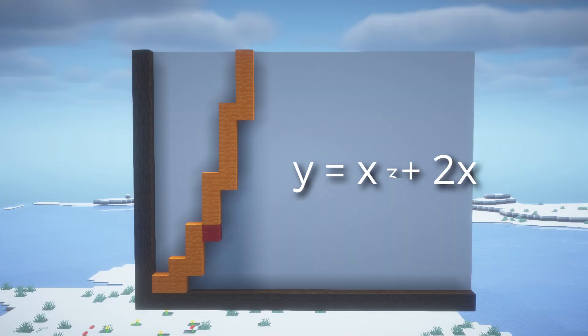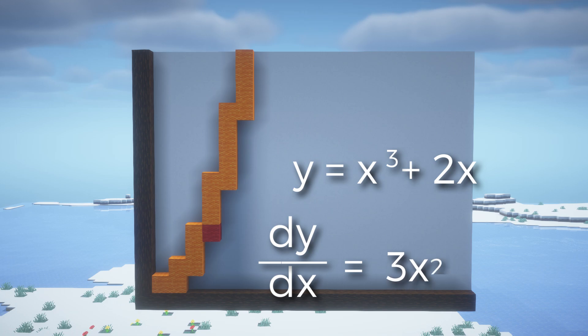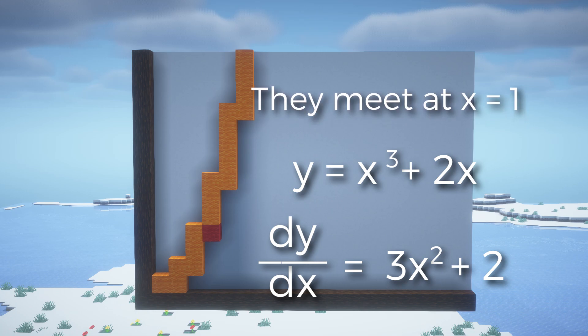So applying this to our equation, if we take the derivative of this equation, our first term would be 3x squared, added to our second term, which would be 2. Now we plug in the point that they meet at, which is x equals 1. So we plug in 1 to get 3 times 1 squared plus 2. This results in a slope of 5.